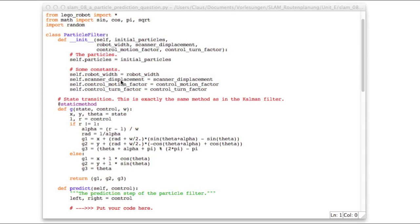So this is the particle filter class. The constructor doesn't take a state and covariance anymore. Instead, it takes a number of initial particles. Otherwise, it is the same as the constructor in the Kalman filter class.